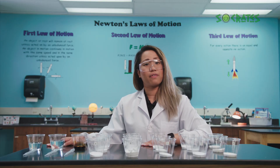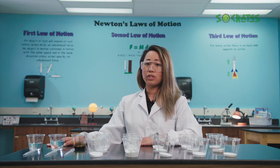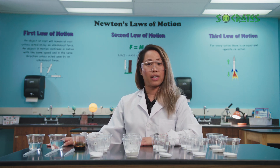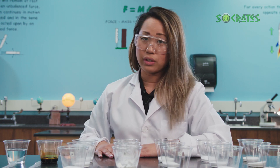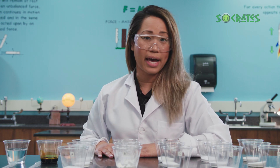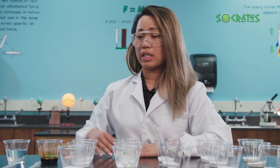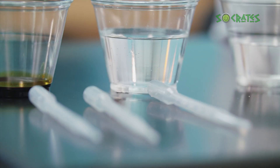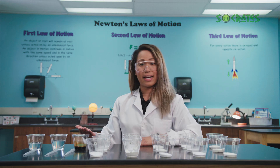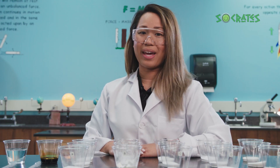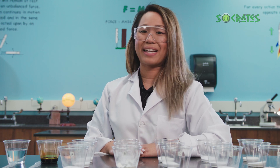Today we're going to be observing the physical and chemical properties of borax, cornstarch, salt, sugar, and baking soda. In order to observe the chemical reactions, we'll need a few different solutions to possibly cause a reaction. For this, we'll be using three droppers, a small cup of water, vinegar, and iodine. We'll record our observations on a property chart. This way, we don't get the substances mixed up.